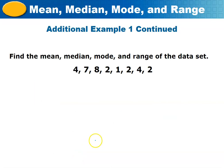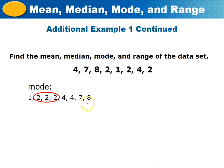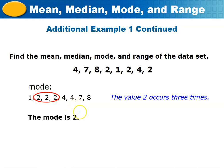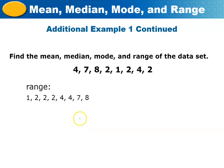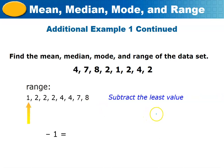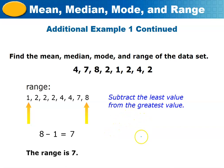For the mode, looking at the arranged data — 1, 2, 2, 2, 4, 4, 7, 8 — the value 2 appears three times, which is the most frequent, so the mode is 2. For the range, subtract the least value from the greatest: 8 minus 1 equals 7. The range is 7.